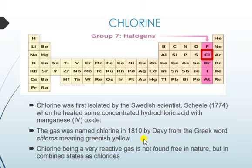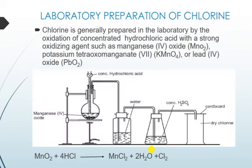Chlorine is a greenish yellow gas. Being a very active gas, it is not found free in nature but in combined states as chlorides. The most abundant chloride is common salt or sodium chloride, which is found both in the sea and in salt deposits.